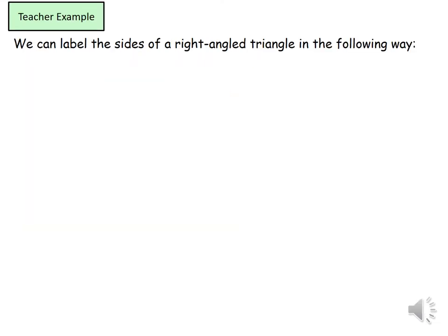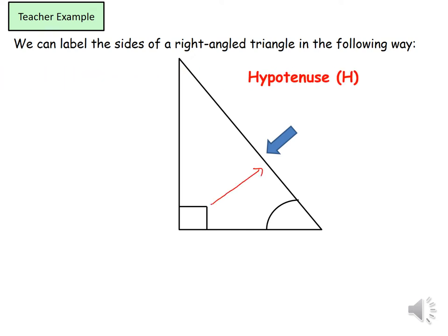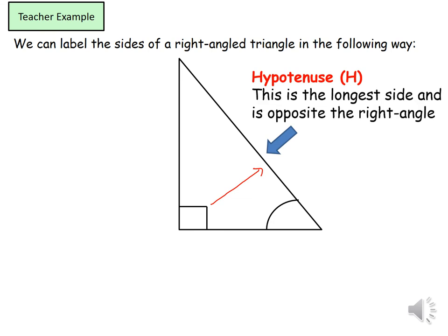Later on we're going to need to label our right angle triangles. So it's the same information similar to the Pythagoras right angle triangle. So we can start off by labeling our hypotenuse. So this side is our hypotenuse because of the right angle. Opposite the right angle is my hypotenuse. So this is the longest side and it is opposite the right angle.